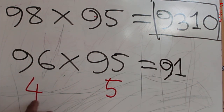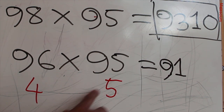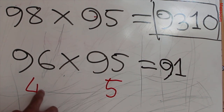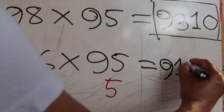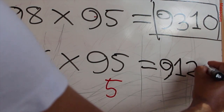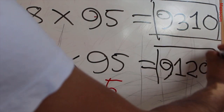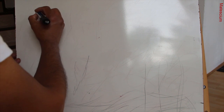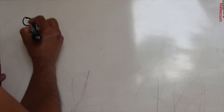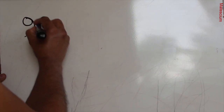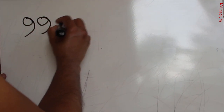Then multiply 5 times 4, which is 20. Write 20 here — the answer is 9120. Very simple! Now let's apply the same trick with a slightly larger number: 999 times 997.